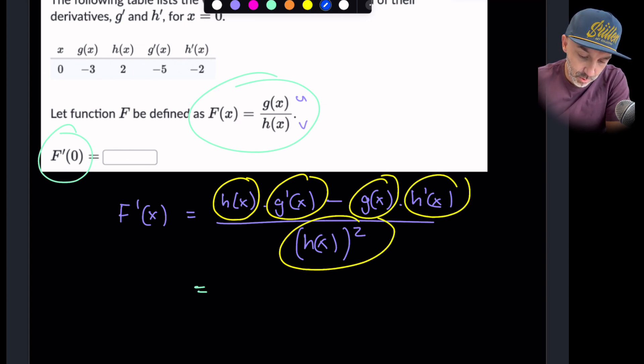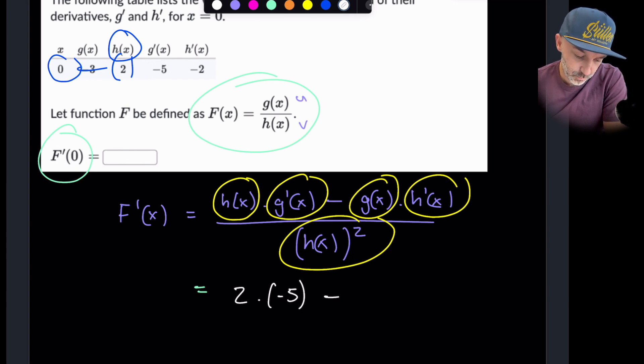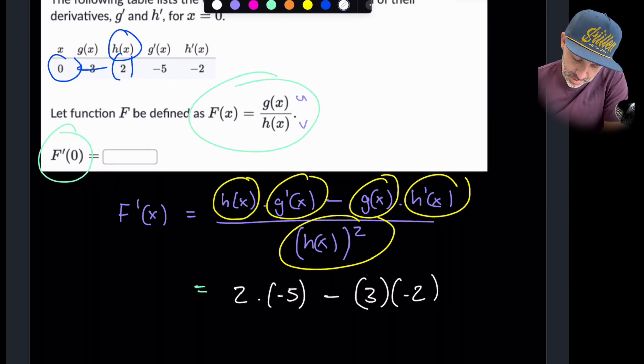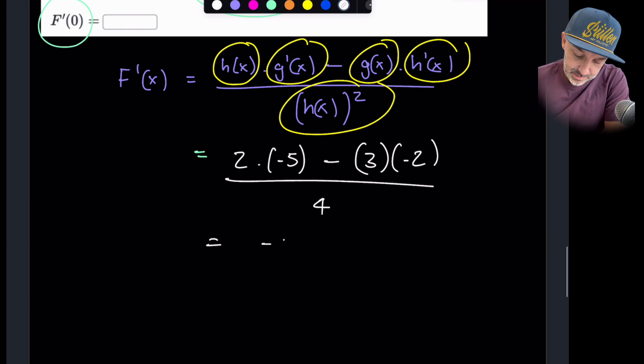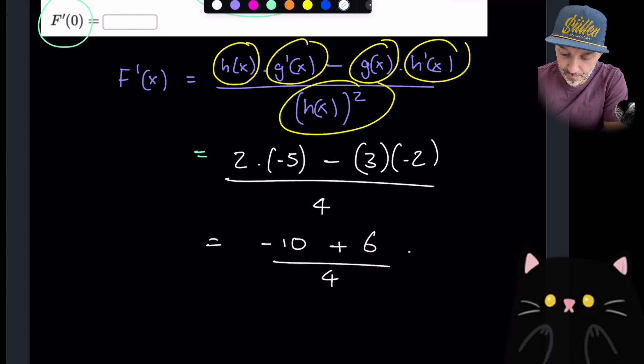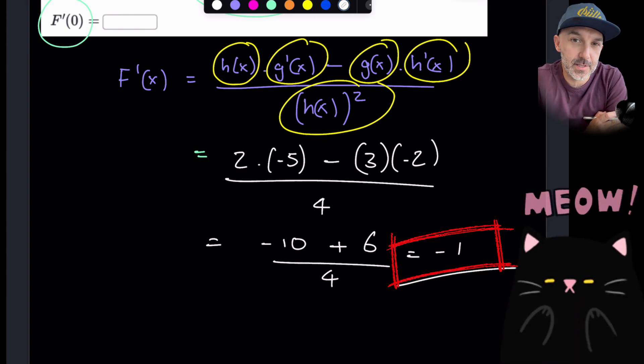Okay, so h of 0, if we go up to the table here, you can see that h of 0 is 2. So I'm just sort of reading across and down. So it's 2 times g prime, which is minus 5, minus g of x, which is 3, and h prime, which is minus 2, and that's all over h of 0 squared, which is going to be 4. Okay, so final answer then is minus 10 plus 6 over 4. So that's minus 10 plus minus 4 over 4, which is minus 1. And there's our answer to that question.